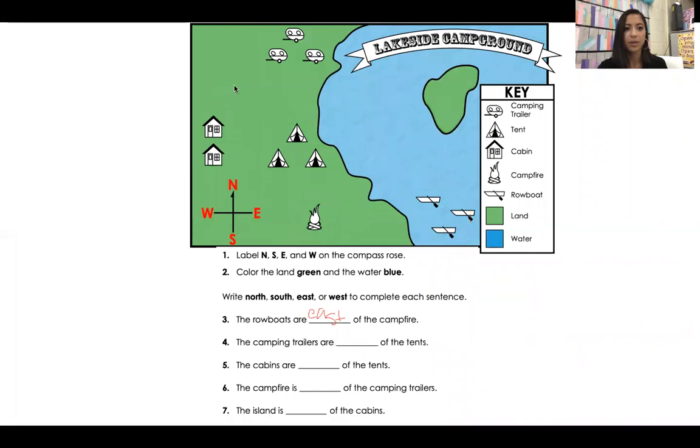Next, we are going to change colors and we are going to do the camping trailers. The camping trailers, which are up here, are blank of the tents. Here are the tents. Are the camping trailers south of the tents? East of the tents, north of the tents, or west of the tents? If you said north, you're correct.